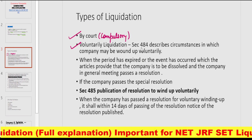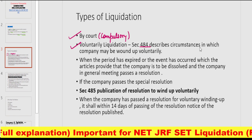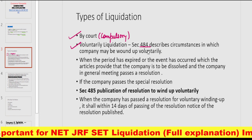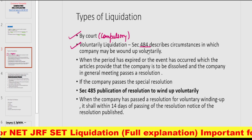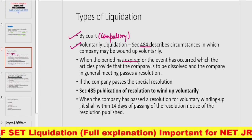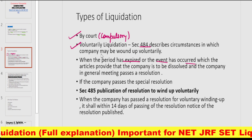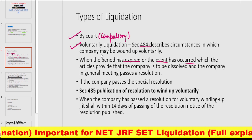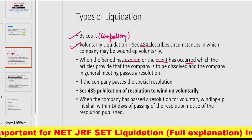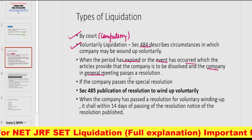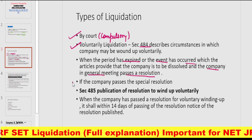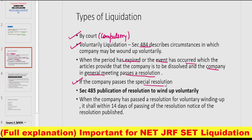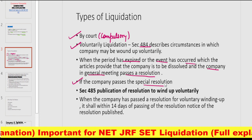Doosra hai voluntary liquidation, jo ki Section 484 mein described hai. Iske circumstances mein — pehla reason ho sakta hai when the period has expired aur the event has occurred, jiske liye company bani thi, jo ki articles ke andar provide ki thi, jiske baad company ko dissolve hona padega. Company general meeting mein ek resolution pass kar deti hai. Ya phir ek special resolution se bhi company wound up ho jaati hai voluntarily.